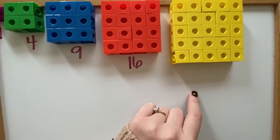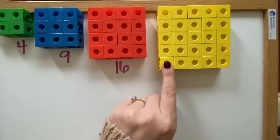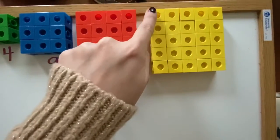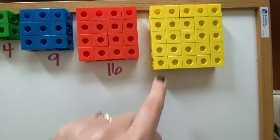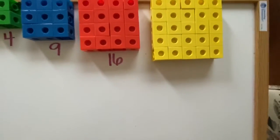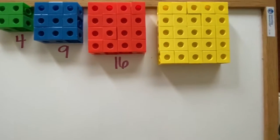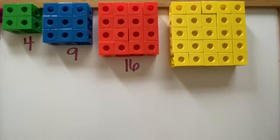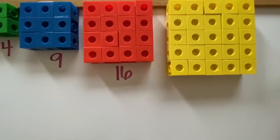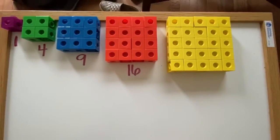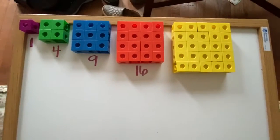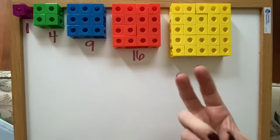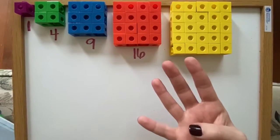This would be if we had 5 rows and 5 columns. What would we need to skip count by? We would skip count by 5s. Do that with me, okay? So, ready? Go. 5, 10, 15, 20.